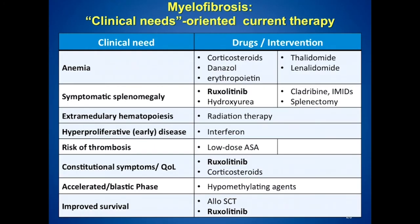Our armamentarium is very limited, which is why the pharmaceutical industry is investing heavily in this disease despite its relative rarity. For anemia, the most active agents are corticosteroids, danazol, erythropoietin, thalidomide, and lenalidomide. I have a patient who has been on thalidomide for almost eight years, which is remarkable.